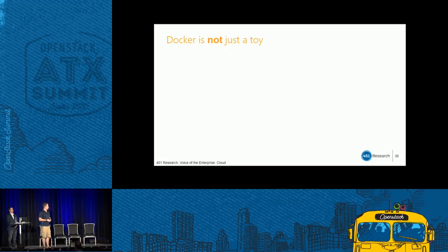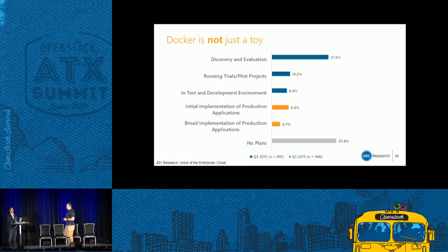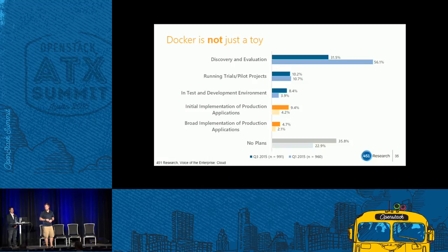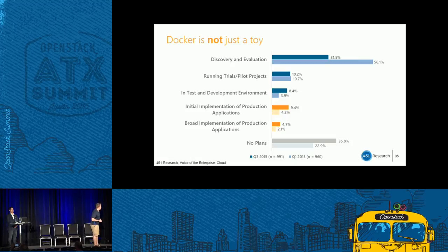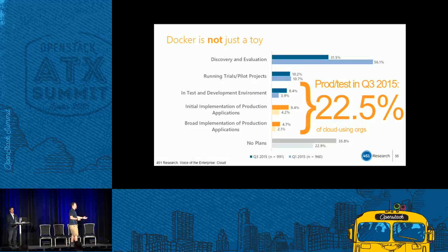We asked about 1,000 people in one of our cloud surveys about container adoption. We've run the survey twice. The darker colors are Q3 last year; the lighter colors are Q1 last year. Over the course of two quarters, production deployments doubled from just over 6% to over 14%. It's not just developers who are interested — enterprises are picking it up very quickly. Docker is just over three years since it was open-sourced.